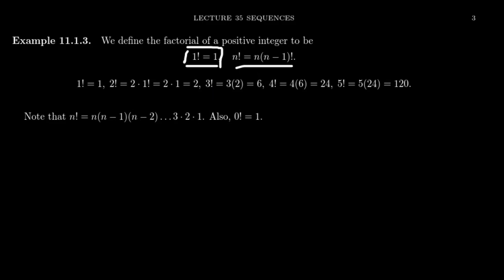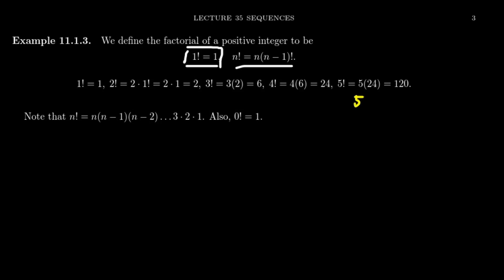Four factorial is recursively defined as four times three factorial. Three factorial is six, so four times six equals 24. Five factorial is five times four factorial — five times 24 is 120. We can see the pattern: five factorial is five times four times three times two times one. That's the usual way people think of the factorial sequence, although we can define it completely recursively.